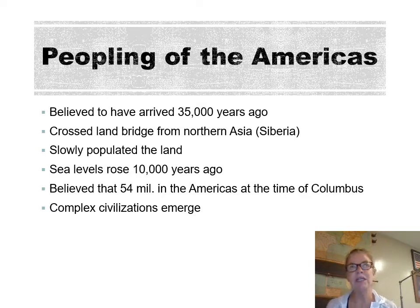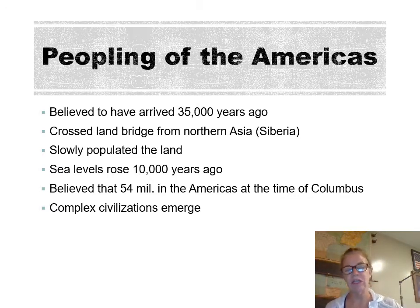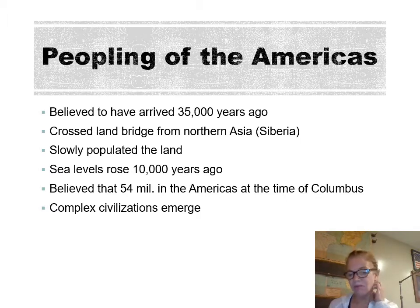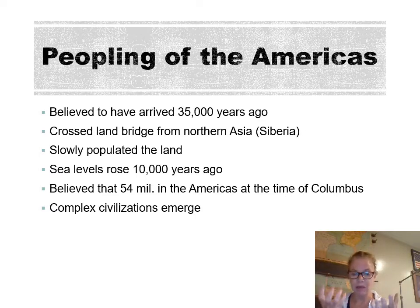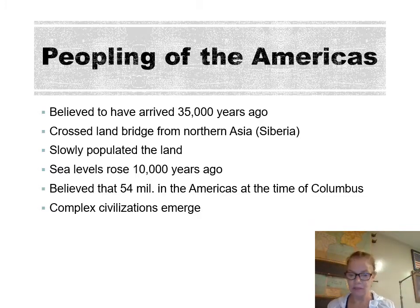How did they get here? It's believed it was anywhere from 45,000 to 23,000 years ago — a video you'll watch says 23,000 years ago, while this slide says 35,000. People crossed over what's known as the land bridge, but really it was either ice or, because so much of Earth's water was held up in ice, the sea levels dropped and people could walk over. They slowly populated the land, trickling down from North America all the way to the tips of South America.